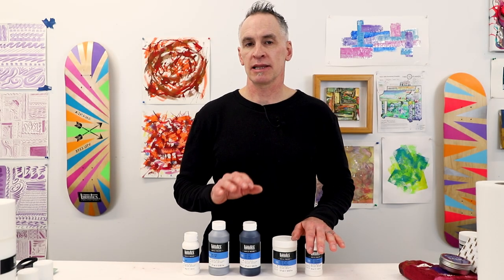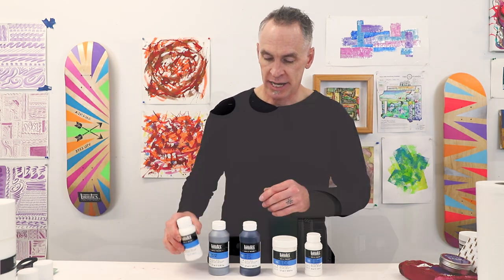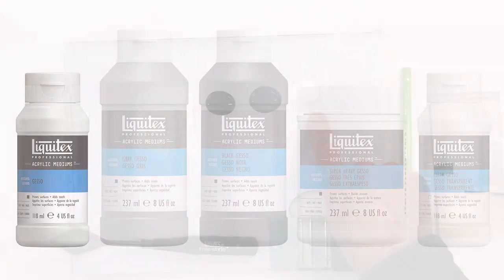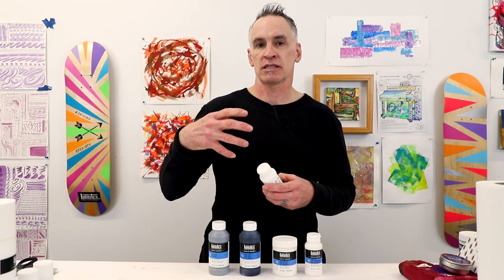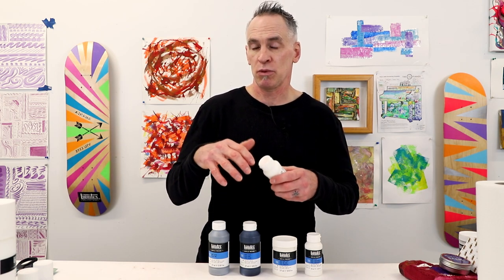Within the Liquitex mediums range, let's take a closer look at gesso. We've got five varieties. Here is our traditional white gesso, and we can see that on the palette right here. It's got excellent coverage. Think of gesso as the material you use to seal and prime your surface.